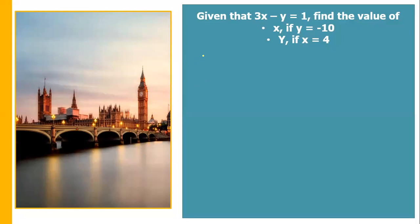First, we substitute y with negative 10. The equation given is 3x minus y is equal to 1. So: 3x minus, substitute y with negative 10, equals 1. So 3x, and then negative times negative 10 is equal to positive 10, equals 1.